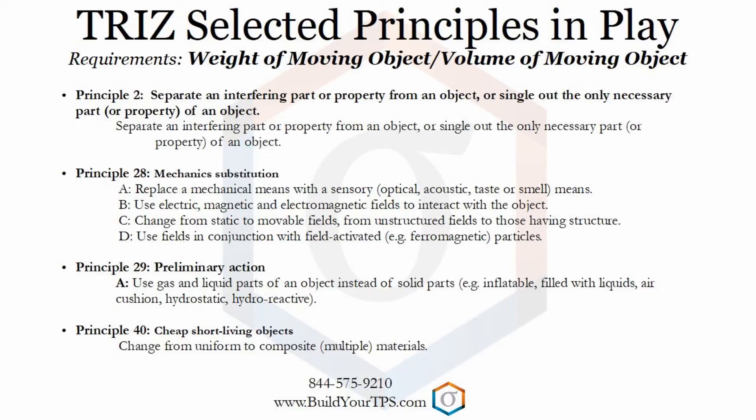Category C: change from static to movable fields. An example could be to use a movable field to levitate the moving object. Category D suggests using fields in conjunction with field-activated particles, which might mean using magnets.